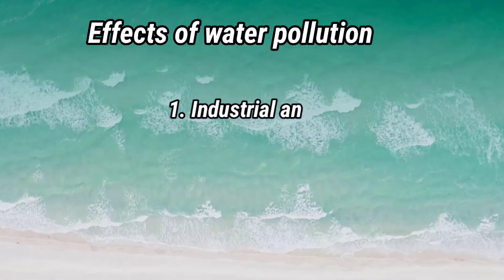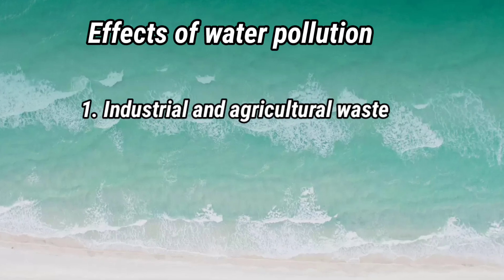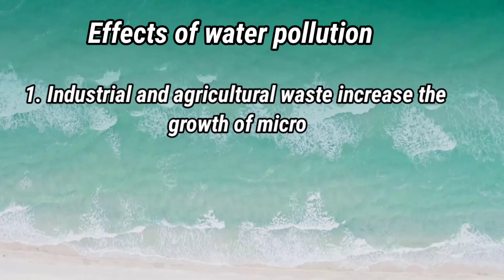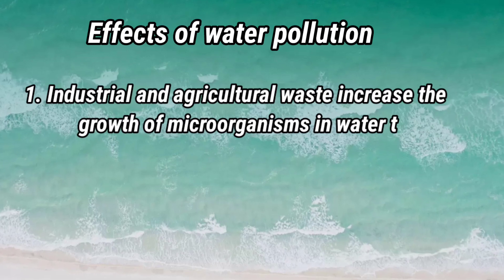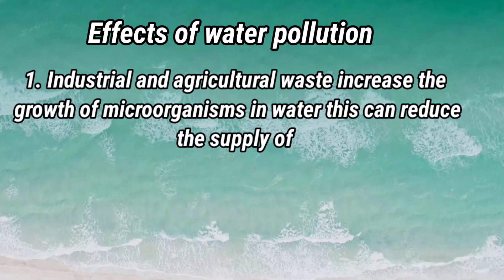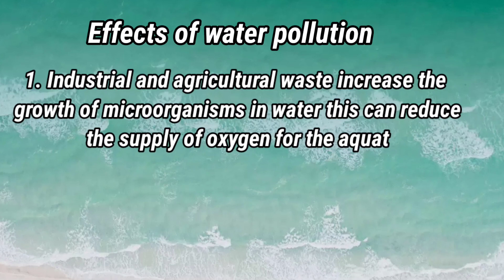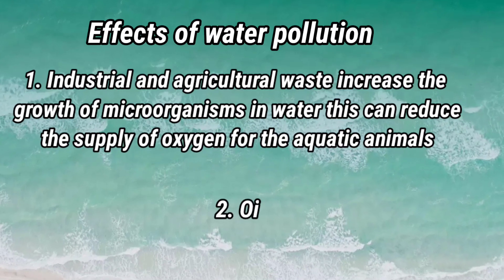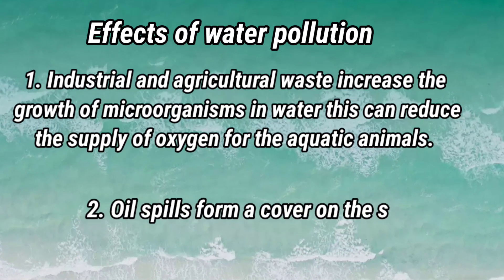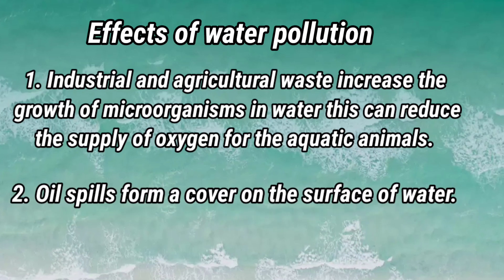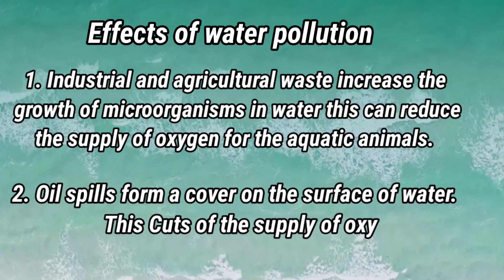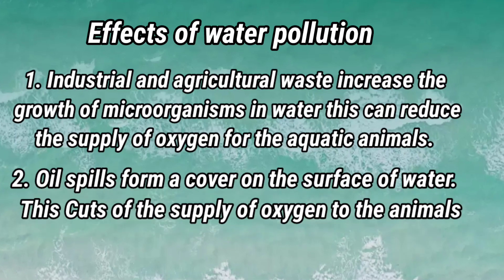Effects of Water Pollution: Industrial and agricultural waste increase the growth of microorganisms in water. This can reduce the supply of oxygen for aquatic animals. Oil spilled forms a cover on the surface of water, which cuts off the supply of oxygen to the animals living underwater.